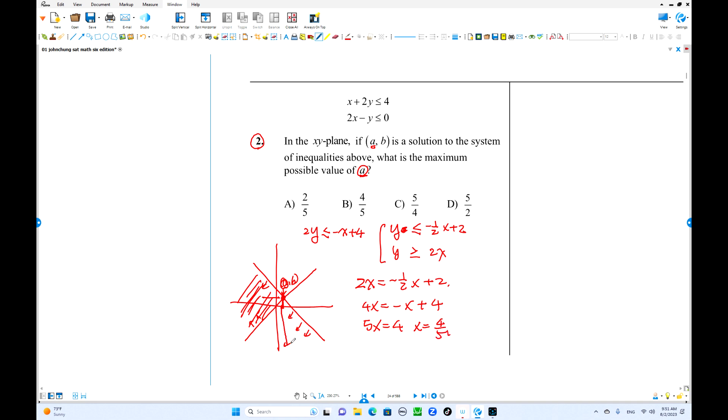This coordinate, 4 over 5, and there is some y coordinate. This is y coordinate. But this point is the maximum value of x. So 4 over 5 is the answer.